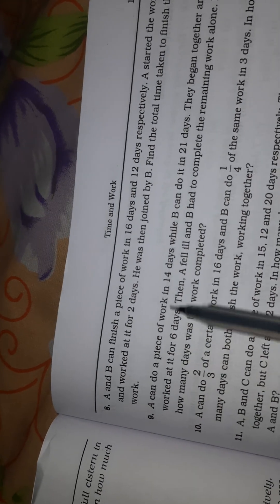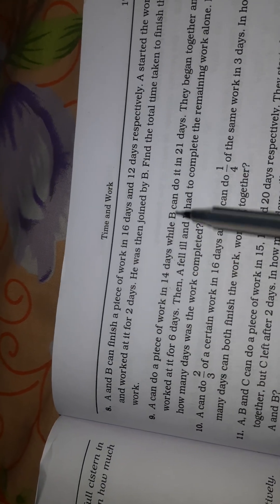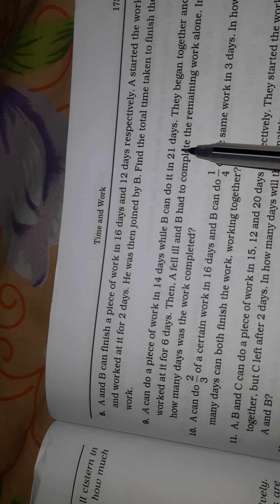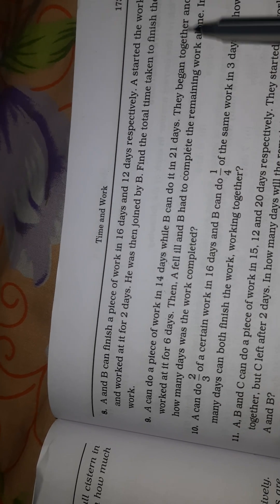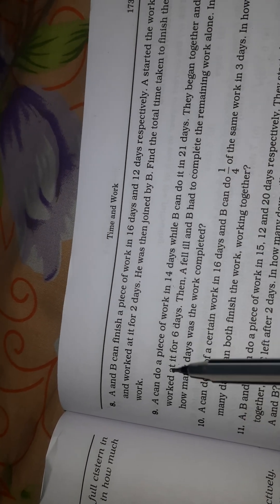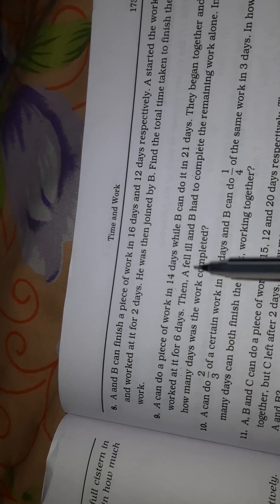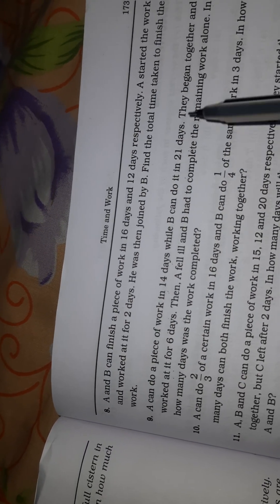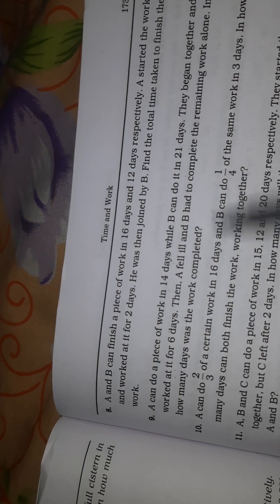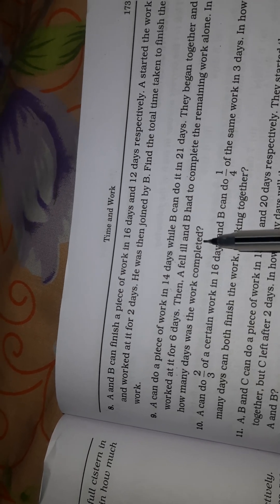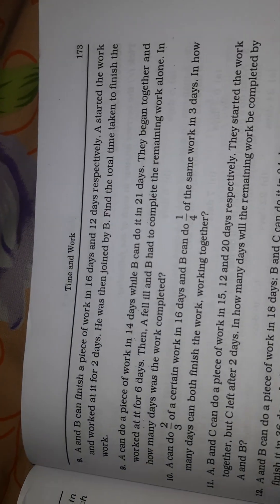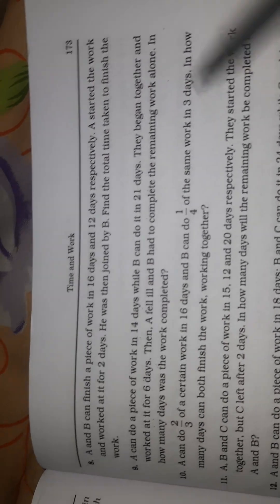A can do a piece of work in 14 days while B can do it in 21 days. They began together and worked at it for 6 days. Then A fell ill and B had to complete the remaining work alone. In how many days was the work completed? Okay Friends, here we will learn a step question and solve.